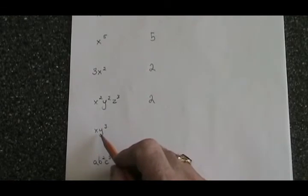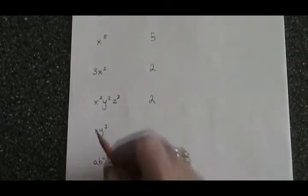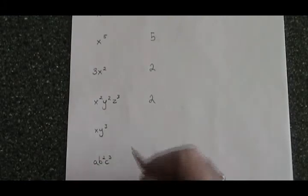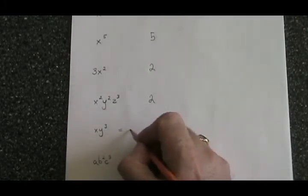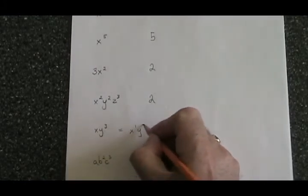In this case, we are ignoring the y cubed and we see there is an x there, but there is no exponent written there. We have to realize that that means we have x to the 1, y to the 3.